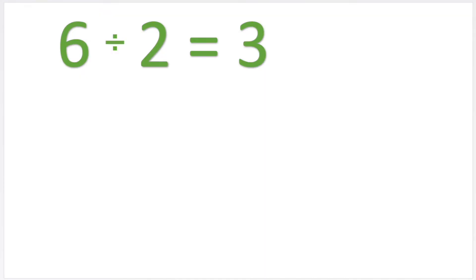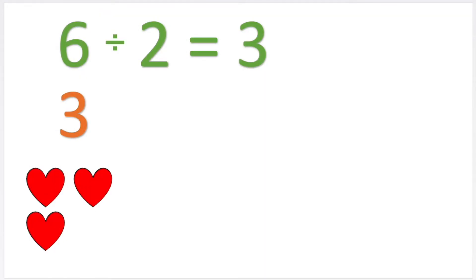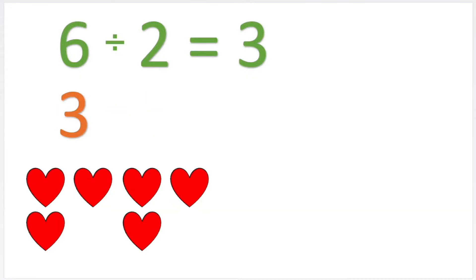I'm going to keep the number three for a moment and get my three hearts back. This time I'm going to try and double my number three. So I'm going to write three, and to double I'm going to times by two. I need to make sure I have one extra for all of these. I had three and now I have six. So three times two equals one, two, three, four, five, six — six!